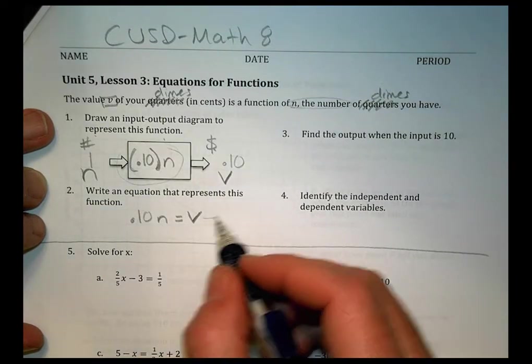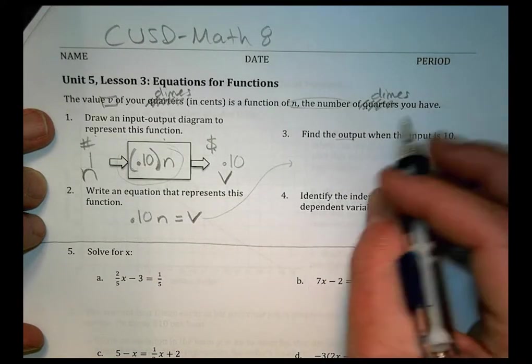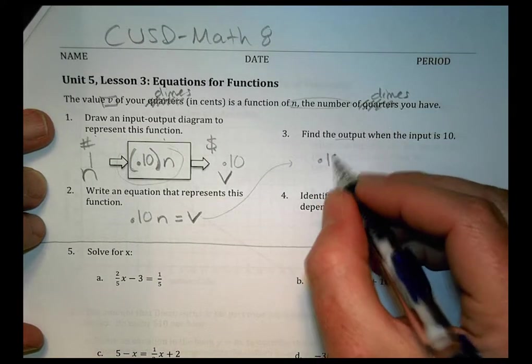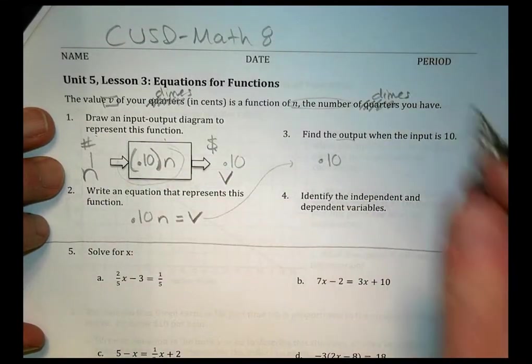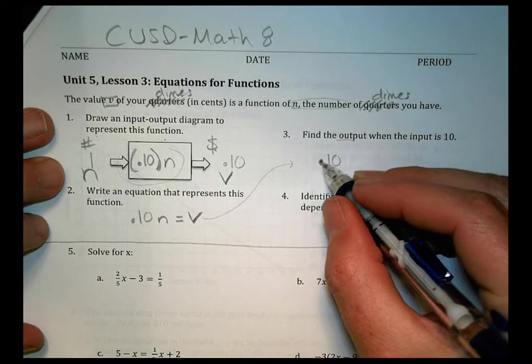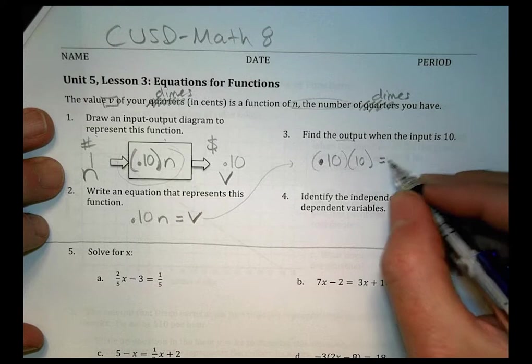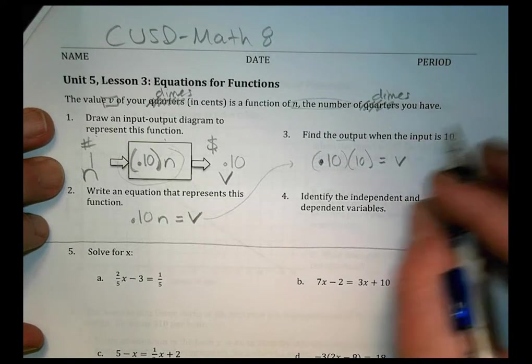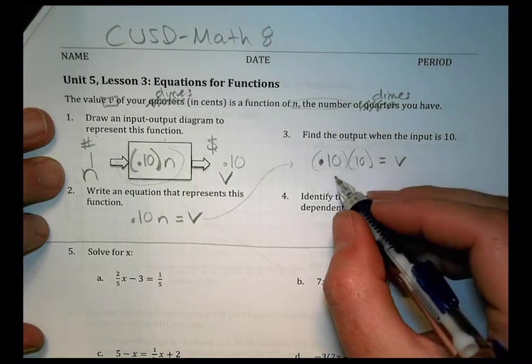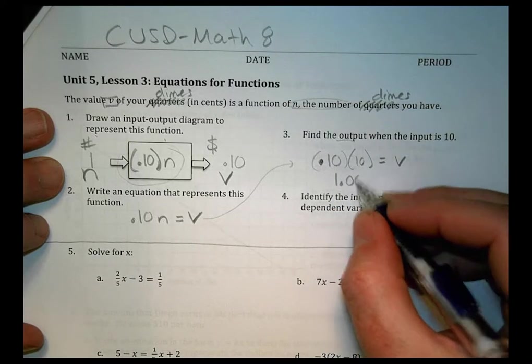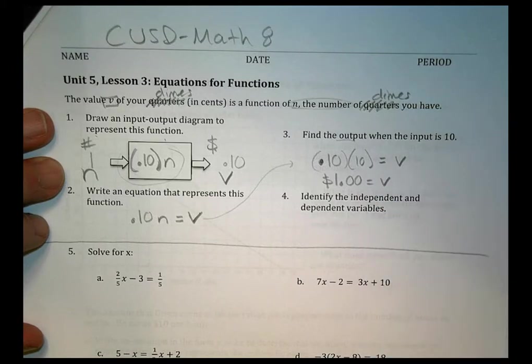Now let's use this equation to find the output when the input is 10. So if my input is 10, that goes in the N section here. We would say 0.10, the value of a dime, times having 10 dimes, is going to equal our value. So 10 times 0.10 has a value of 1.00, or $1 becomes our value.